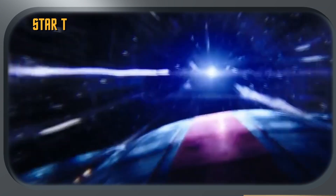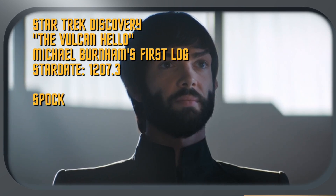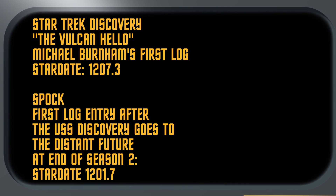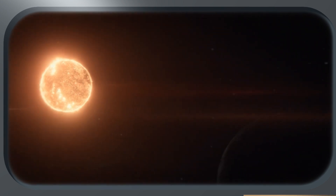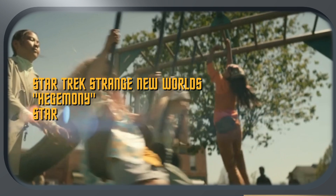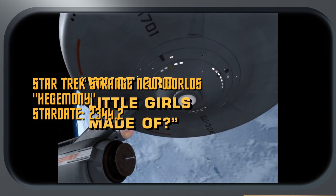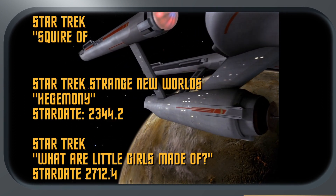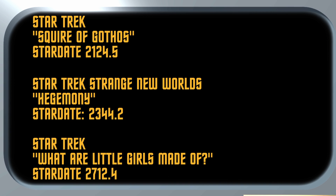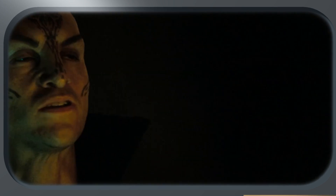It all just makes sense now — yep, not a single stardate out of order, everything fits together perfectly. First officer's log stardate 1207.3. Personal log stardate 1201.7. Okay, so maybe season two of Discovery ended five days before season one started. Captain's log stardate 2344.2. Captain's log stardate 2712.4. Ship's log stardate 2124.5. And maybe season two of Strange New Worlds took place midway through season one of the original series.